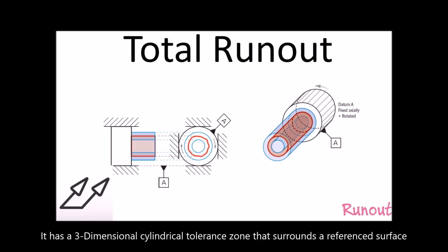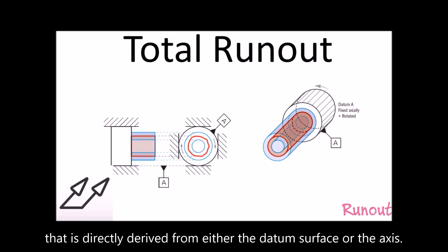It has a three-dimensional cylindrical tolerance zone that's surrounding a referenced surface that is directly derived from either the datum surface or the axis.